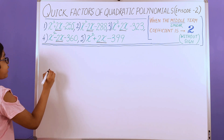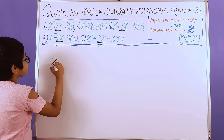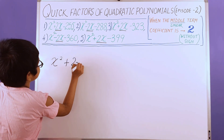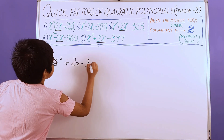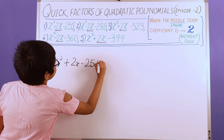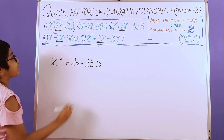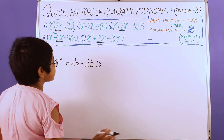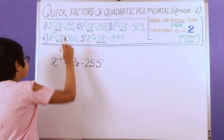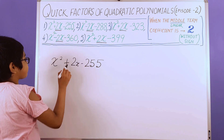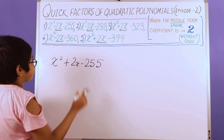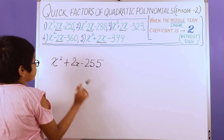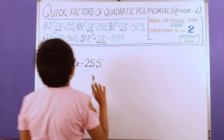In the first polynomial to factorize, we have x squared plus 2x minus 255. All the polynomials have a negative sign in front of the constant term, so we need to focus on the sign in front of the linear or middle term. We have highlighted this 2x because we have the new case.